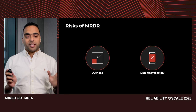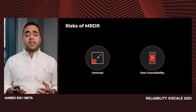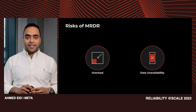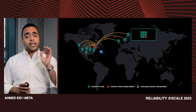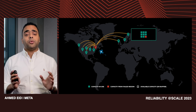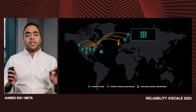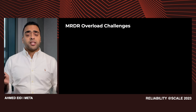Today, we will deep dive into our strategy to mitigate overload risks during MRDR, and hopefully we can discuss our strategy for data unavailability in upcoming at-scale presentations. With the current state of our infrastructure, after having to disconnect one US region due to hurricane risks, all healthy regions are running and consuming all available capacity. With the ongoing risk of load shedding in Europe, draining the EU region is not an option since all healthy regions are consuming all the DR buffer.